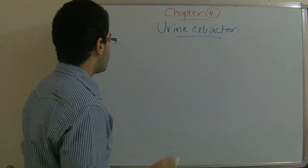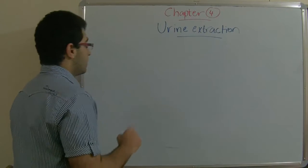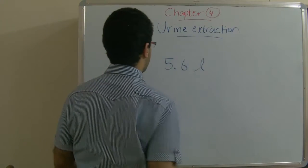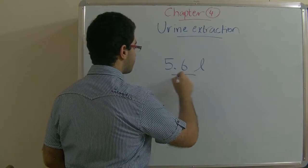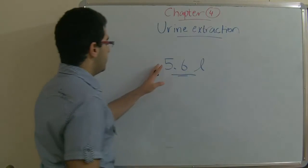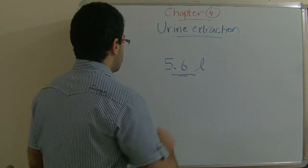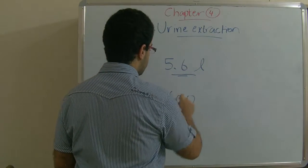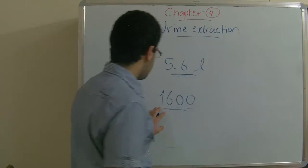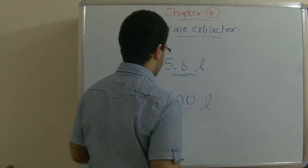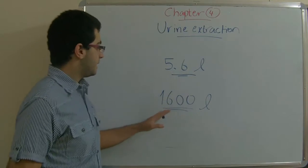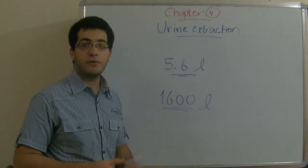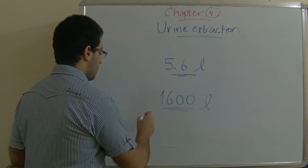The last point is, there is about 5.6 liters of blood which are found inside the human body, about 1600 liters of blood pass through the kidney every day.